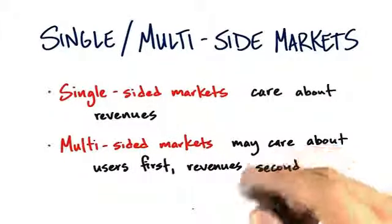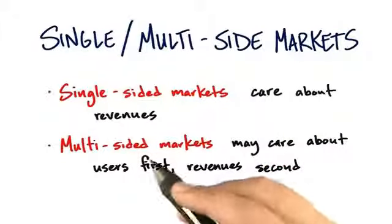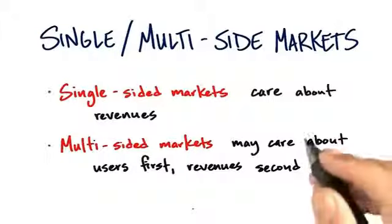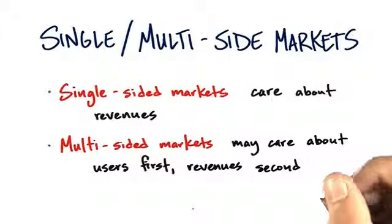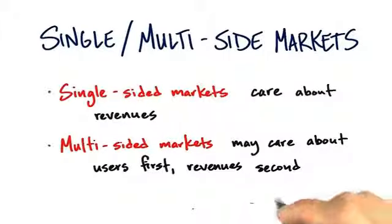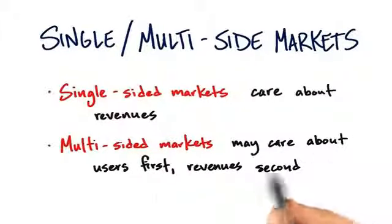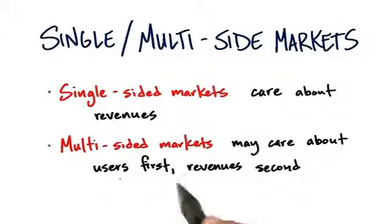The other side are the people using Google AdWords to look for keywords. In multi-sided markets, the company — your startup — typically cares about acquiring a massive amount of users and then figuring out how to monetize those users next. Google decided to go for millions and then tens of millions of users, and then the keywords came after.